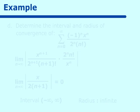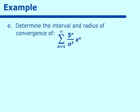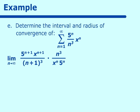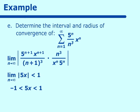Let's try another one: 5^n over n³ times x^n. Using the ratio test: 5^(n+1) x^(n+1) over (n+1)³ times n³ over 5^n x^n. Reducing: 5^(n+1) over 5^n gives 5, x^(n+1) over x^n gives x, and n³ over (n+1)³ approaches 1. So we get |5x| < 1, meaning 5x is between −1 and 1, giving x between −1/5 and 1/5. We must now check the endpoints.